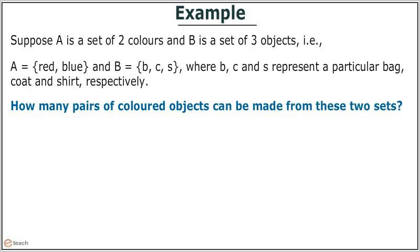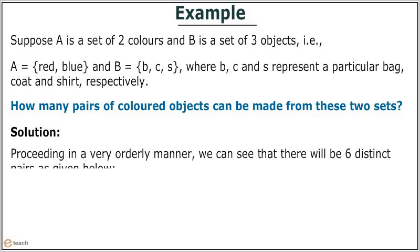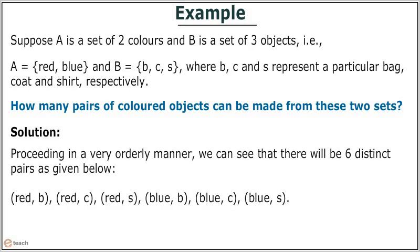How many pairs of colored objects can be made from these two sets? Let us have the solution. Proceeding in a very orderly manner, we can see that there will be six distinct pairs as given below: red comma b, red comma c, red comma s, blue comma b, blue comma c, blue comma s. Thus, we get six distinct objects.